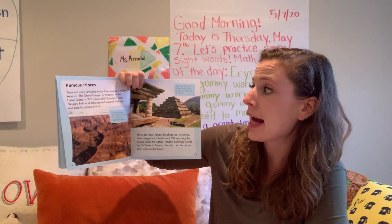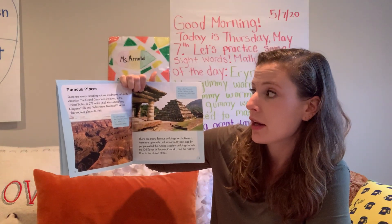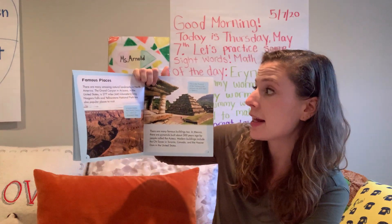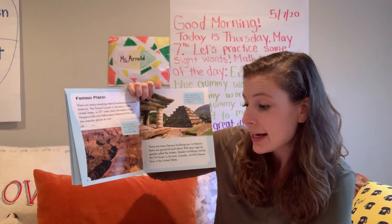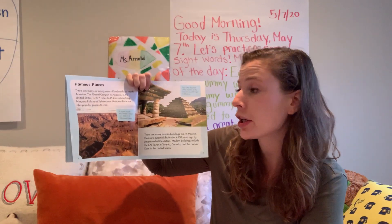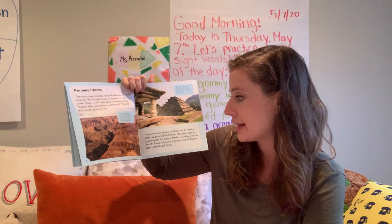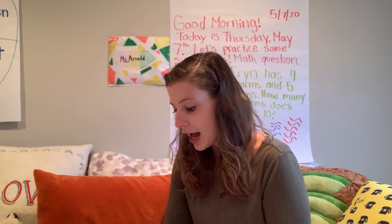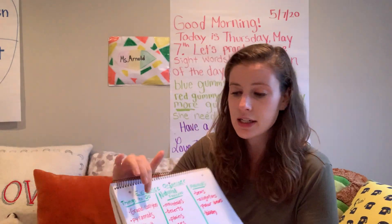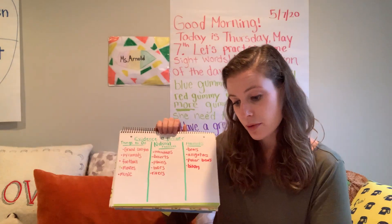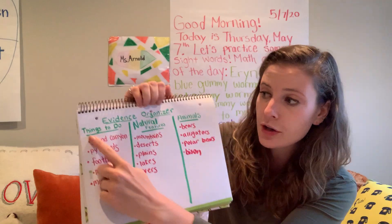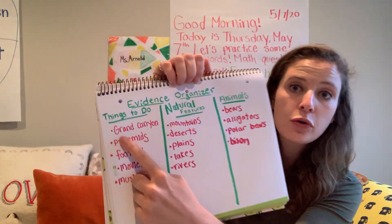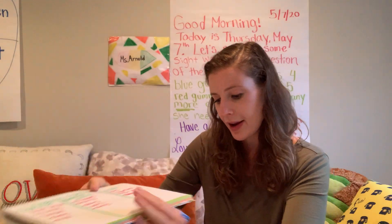There are many amazing natural landmarks in North America. The Grand Canyon in Arizona in the United States is 277 miles long. Niagara Falls and Yellowstone National Park are also popular places to visit. Right there we've learned of three different places you can visit that are pretty cool. I just wrote Grand Canyon on mine, but you could also write Niagara Falls and Yellowstone National Park. I put Grand Canyon under things to do because that is somewhere that you can go and visit.